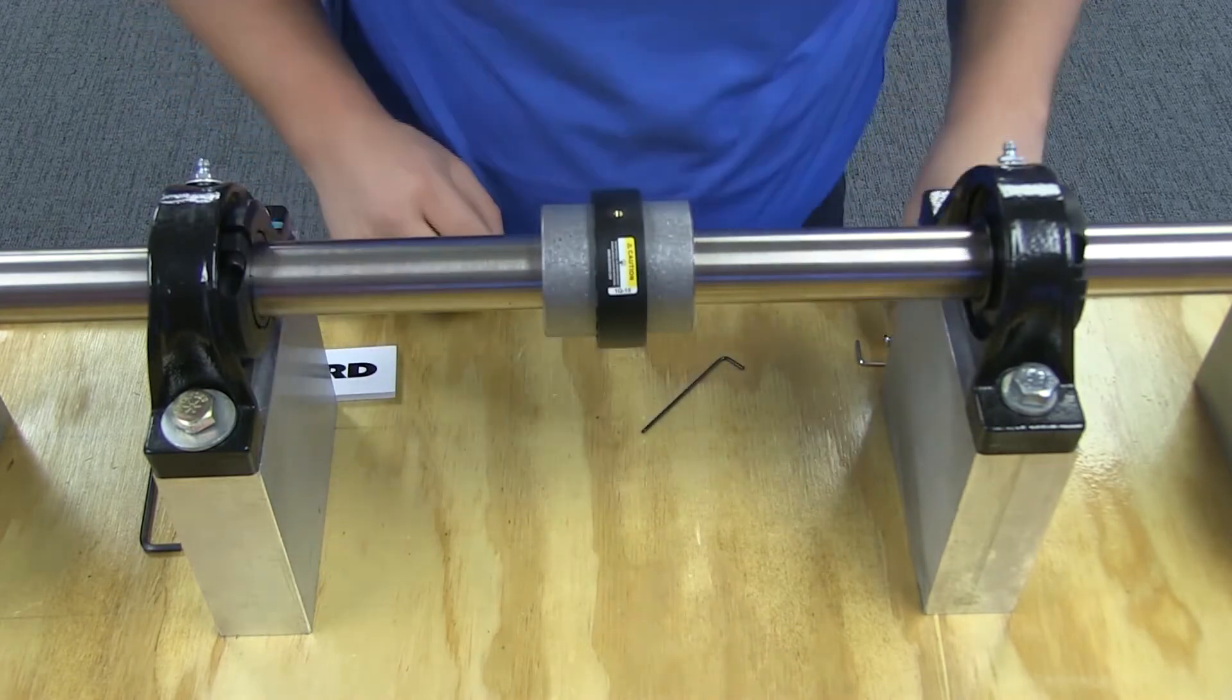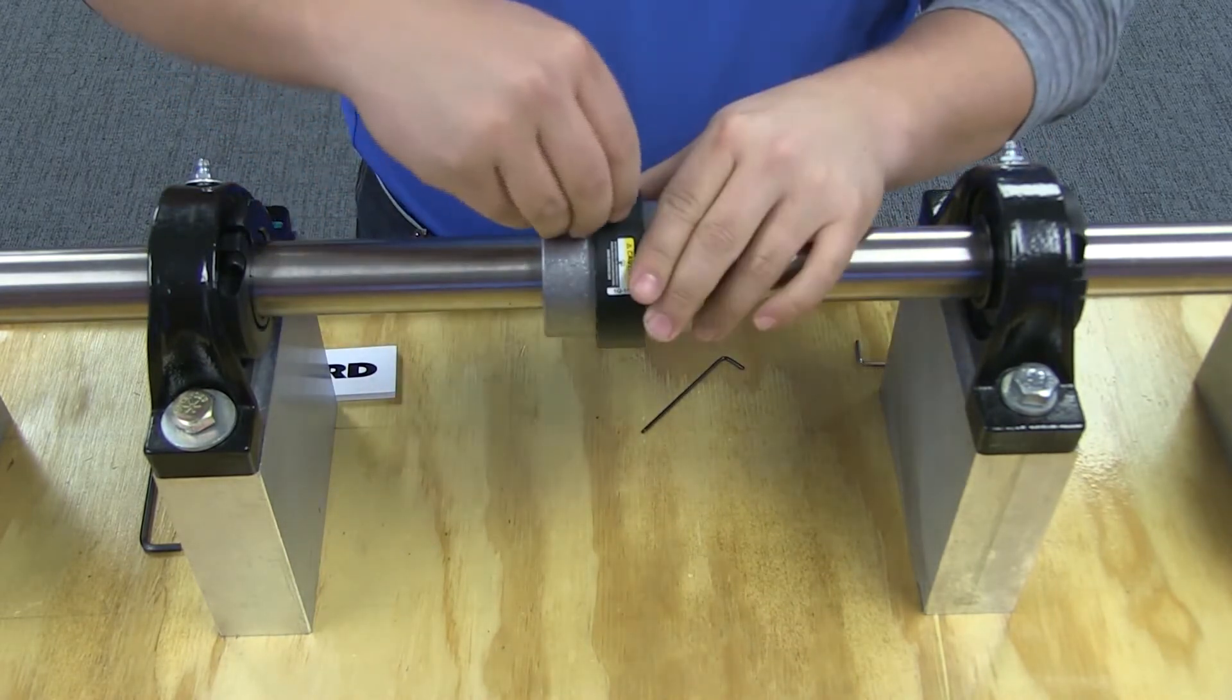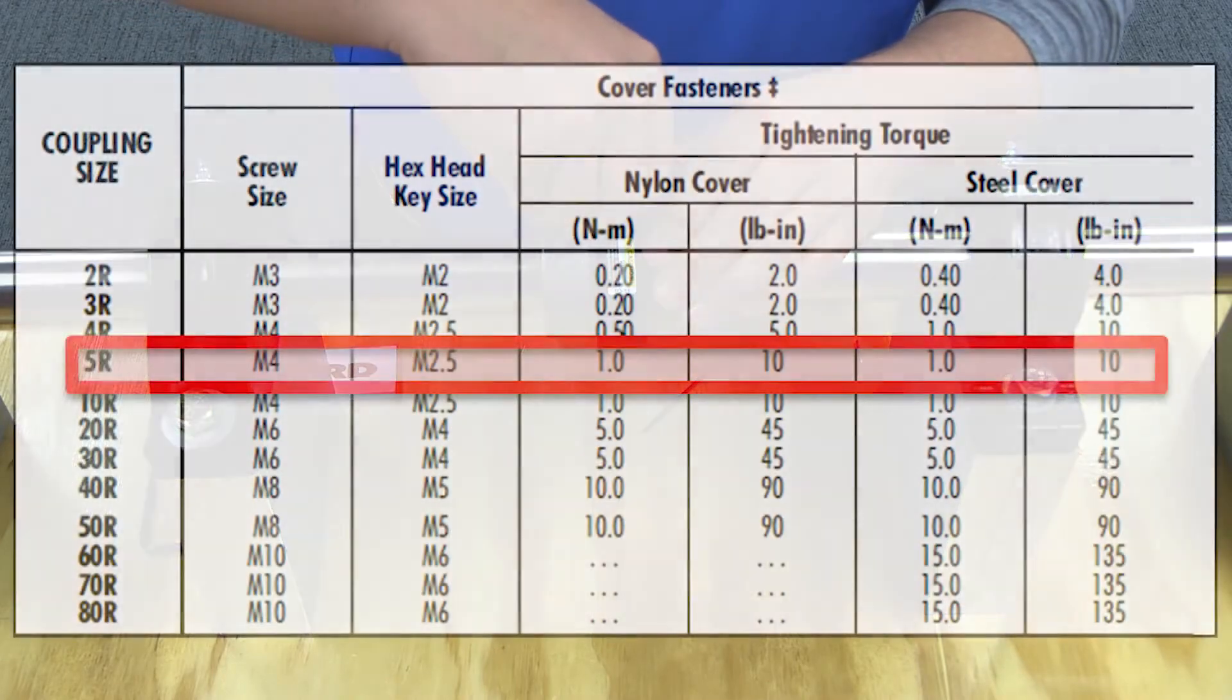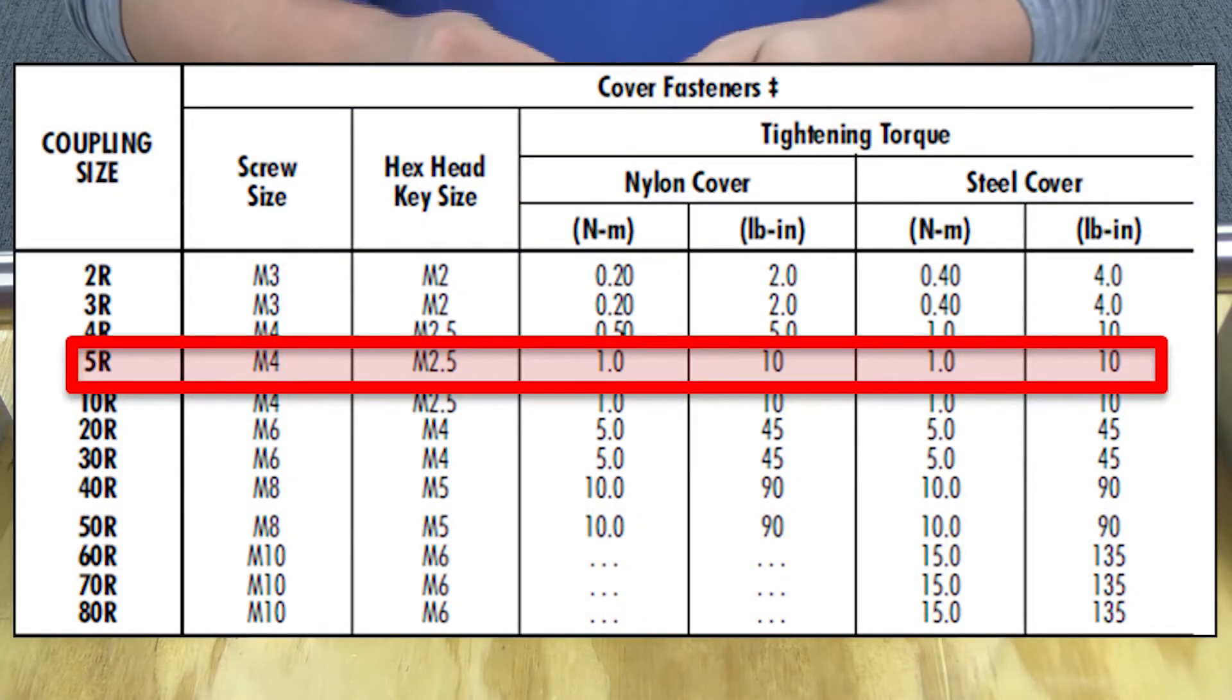To finish installation, install and tighten the cover fasteners. Make sure you do not exceed the tightening torque values. For additional information on torque values, please refer to this table.